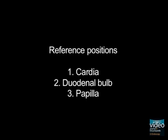In the upper abdomen, you have three important reference positions to identify the anatomical guiding structures: first, the cardia; second, the duodenal bulb; and third, the level of the papilla.